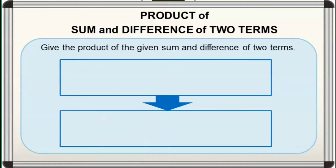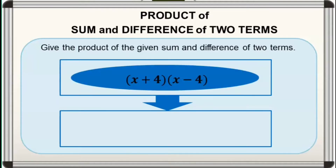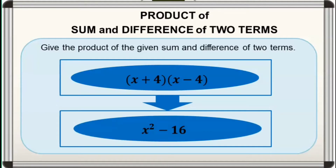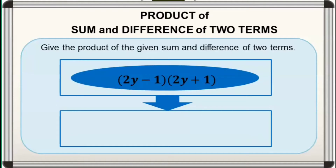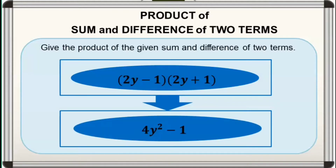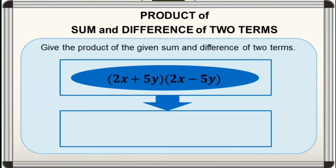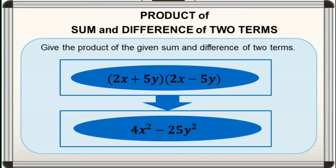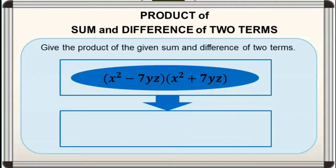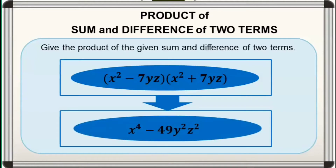We'll start with this simple activity. Give the product of the given sum and difference of two terms. For the first one, it is equal to x squared minus 16. For the second one, it is equal to 4y squared minus 1. For the third one, it is equal to 4x squared minus 25y squared. And for the last one, it is equal to x raised to the power of 4 minus 49y squared z squared.